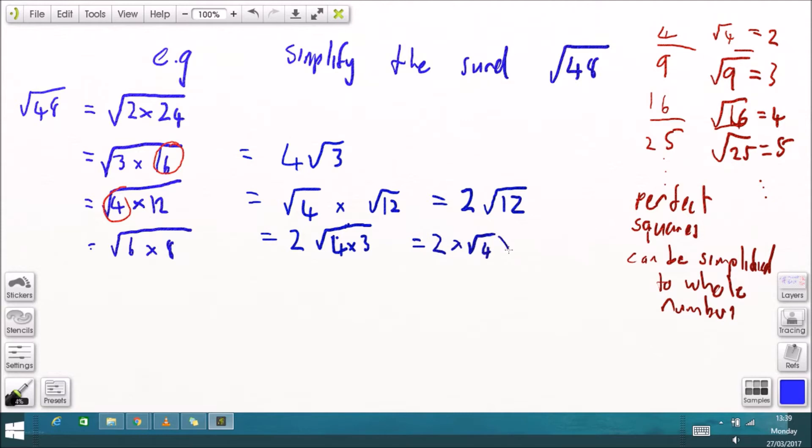and there we've got another perfect square so that can be written as 2 times root 4 times root 3 which is 2 times 2 times root 3, 4 times root 3, the same thing we got when we did it the first time